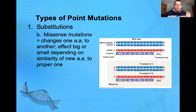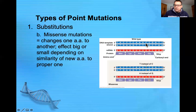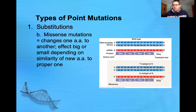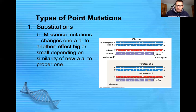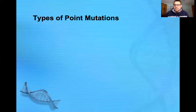You can also have missense mutations, where one amino acid is changed to another. In the wild type, or normal gene, we have a C that is replaced with a T, which changes the codon from GGC to AGC, so a different amino acid — serine — is put in place of glycine. The effect of this can be big or small depending on the similarity of the new amino acid to the original. If they're very similar, there may be no change to the protein. If they're very different, there could be a big change in protein structure that is detrimental — or it could even be beneficial, giving a new function to the cell. More often than not, though, these are harmful.